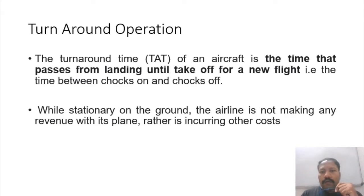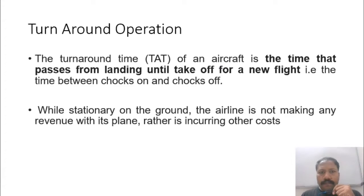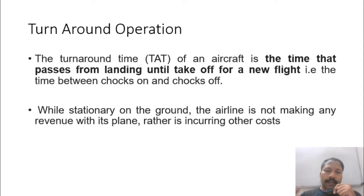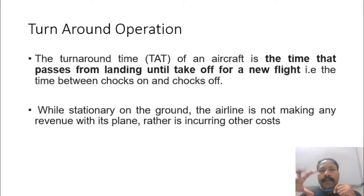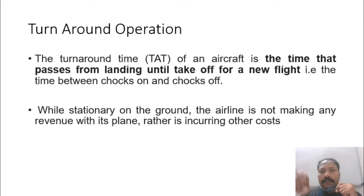While the aircraft is stationary on the ground, the airline is not making any revenue but rather is incurring costs. The income or revenue generation of an airport comes when people enter, check in, buy tickets, or use basic services. The costs incurred are the services that any airline has to pay in order to receive services in return.